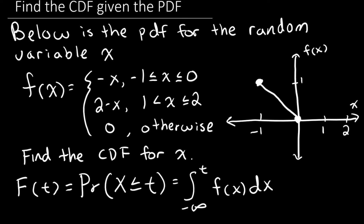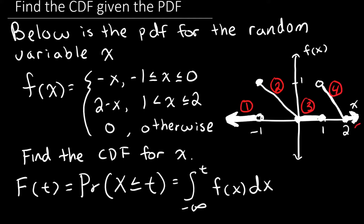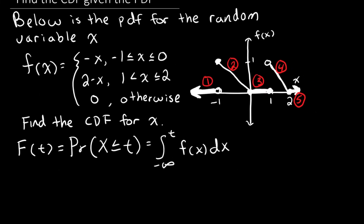We have two linear lines with negative slope between negative 1 and 0, and between 1 and 2. The PDF must be defined for all values of x. Therefore, the PDF takes the value 0 for x less than negative 1, between 0 and 1, and again when x is greater than 2. You might have thought that this PDF only had 3 pieces, though by graphing it, we can see that it actually has 5 pieces. Therefore, our CDF will be a piecewise function with 5 pieces.